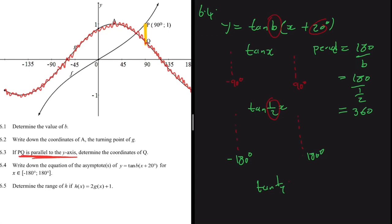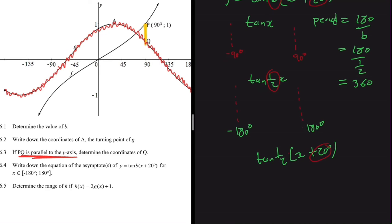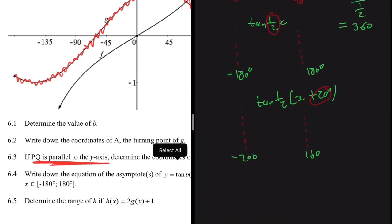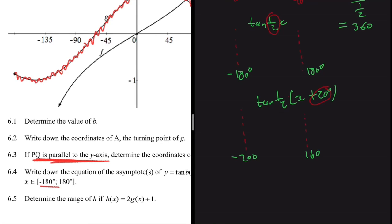Now accounting for the +20° horizontal shift: a positive shift moves the graph 20 units to the left. So our asymptotes shift left by 20°: 180° - 20° = 160°, and -180° - 20° = -200°.